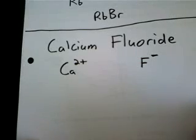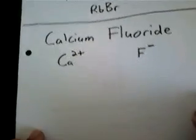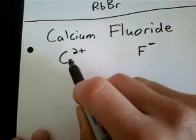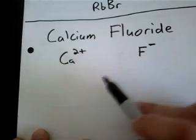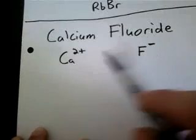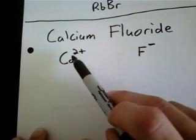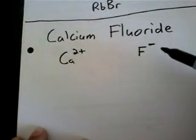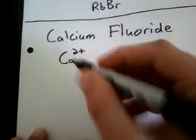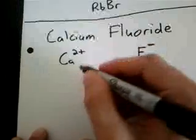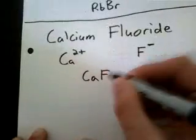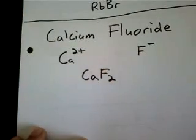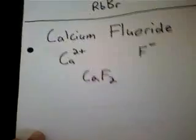And if we adjust the subscripts, it looks like if we leave the calcium alone and we double the amount of fluoride ions, then the sum of the charges of the cations will cancel out with the sum of the charges on the anions. So the correct formula is going to be CaF2. So it's pretty straightforward.